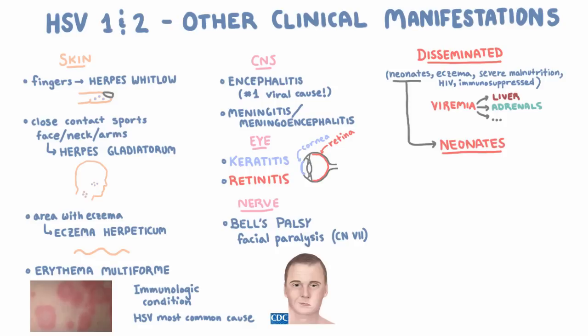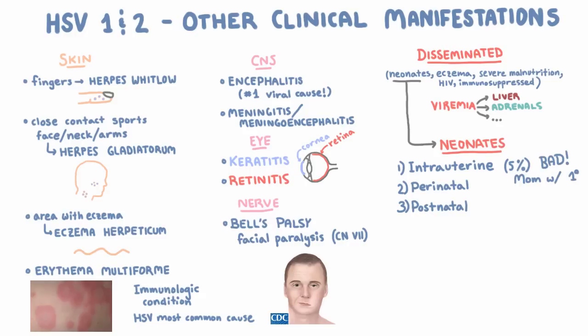Let's go a little more in-depth regarding neonatal infection. The infection can actually occur in three different periods: intrauterine, before birth; perinatal, during birth; or postnatal, after birth. Intrauterine infection is about 5% of cases, and that's when the fetus gets the infection in the uterus. This is most likely to happen if mom gets a primary herpes infection during pregnancy, and it can result in a lot of bad outcomes, including fetal death.